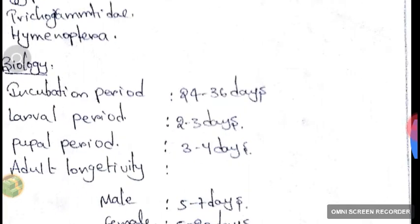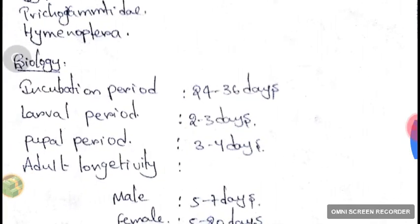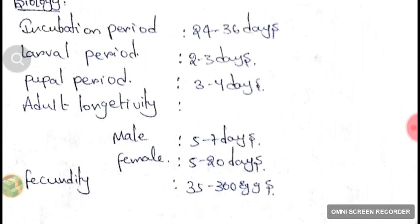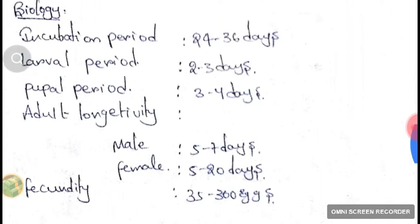Let's discuss in detail about the biology of Trichogramma. The incubation period is 24 to 36 days. Larval period is 2 to 3 days. Pupal period is 3 to 4 days. Adult longevity for male is 5 to 7 days and for female is 5 to 20 days. Fecundity is 35 to 300 eggs.